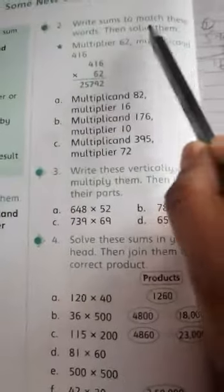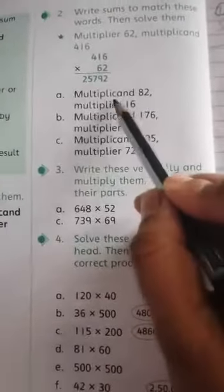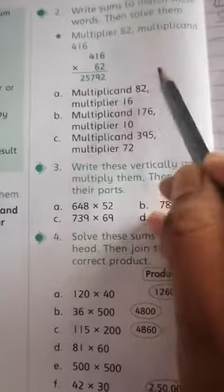Be careful on reinforcement, please use your pencils because you might make mistakes, so that you can erase and correct the wrong questions. Now question number 2: write the sums to match these words and solve them. Multiplier 62.